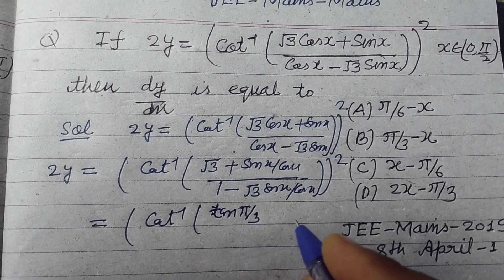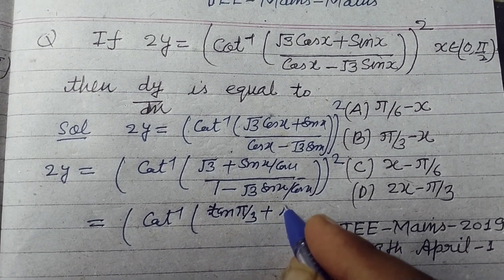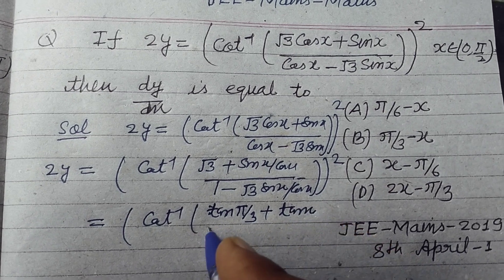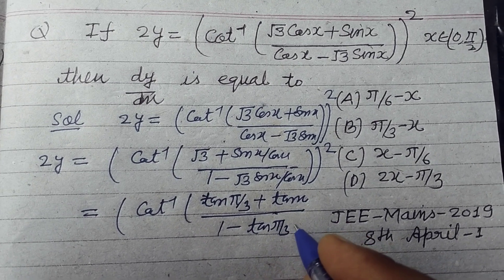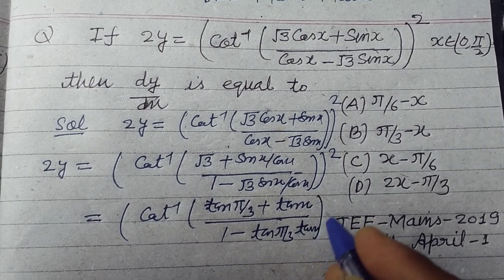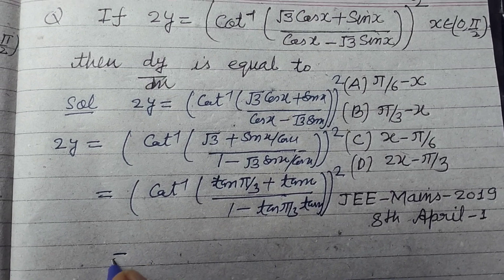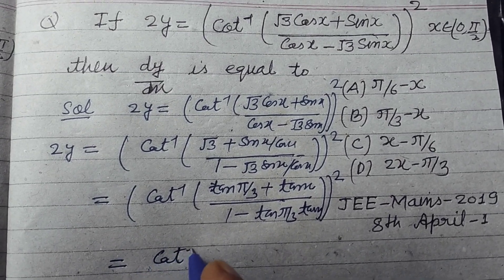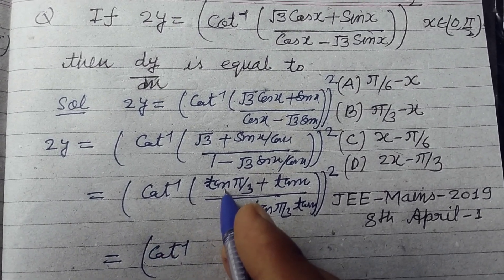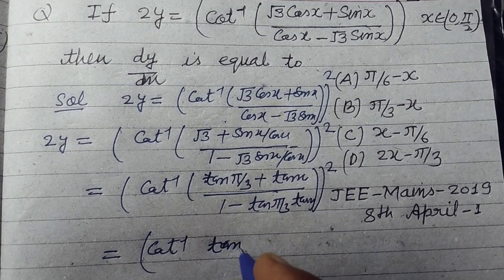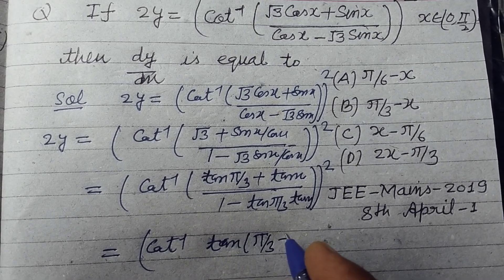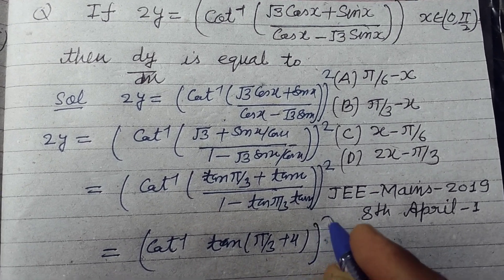This will become tan a plus tan b upon 1 minus tan a tan b, so this is tan of π/3 plus x, whole square.